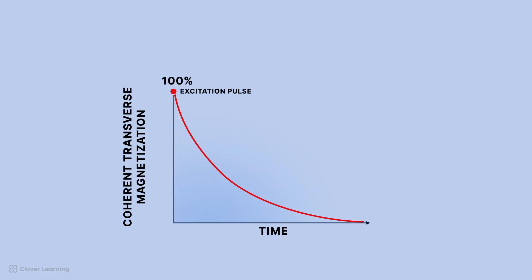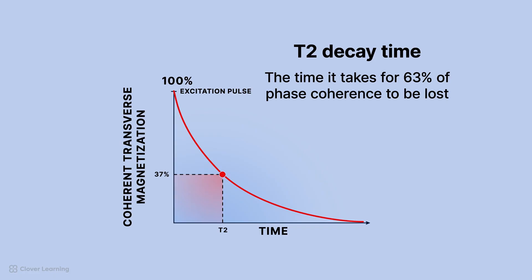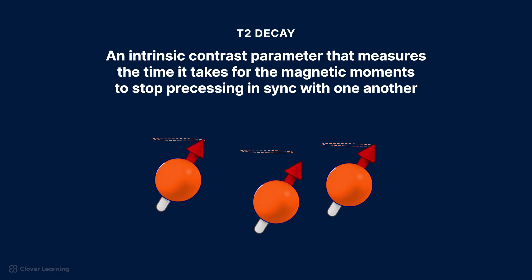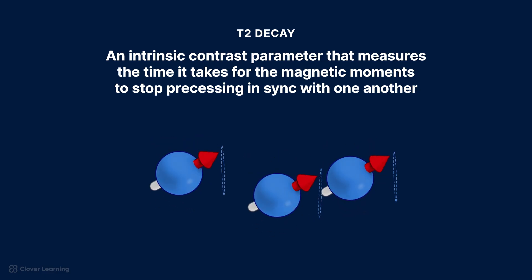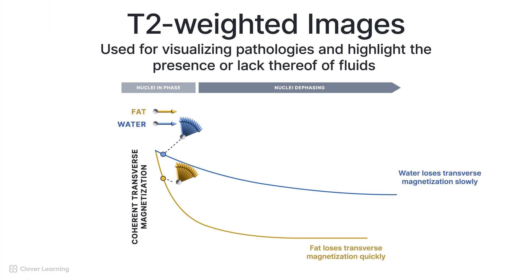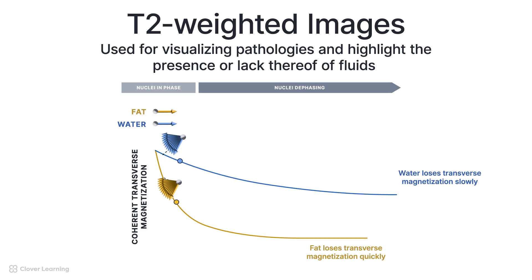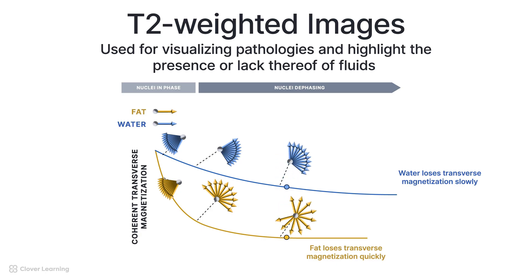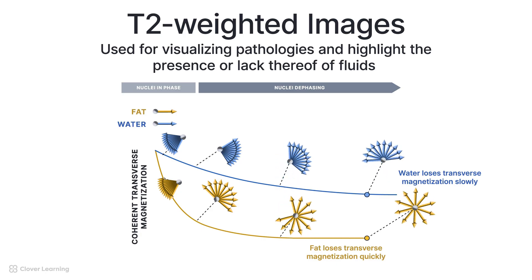T2 weighting emphasizes T2 contrast, which emphasizes the T2 decay time of different tissues. T2 decay time is the time it takes for 63% of the phase coherence to be lost. In other words, it is an intrinsic contrast parameter that measures the time it takes for the magnetic moments to stop precessing in sync with one another. T2-weighted images are used for visualizing pathologies and are particularly good at highlighting the presence, or lack thereof, of fluids, because water and other fluids have longer T2 decay times.